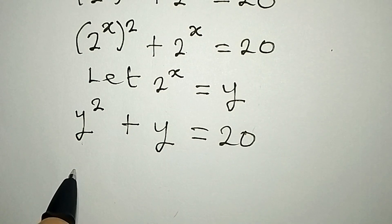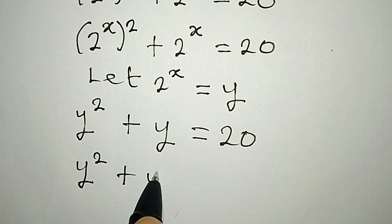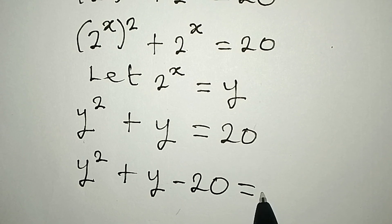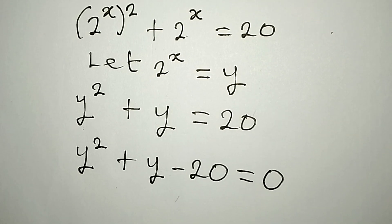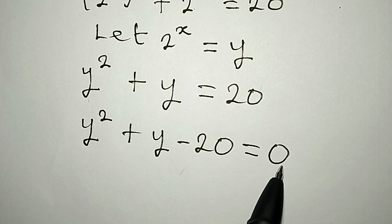Bring 20 to the other side as it becomes y to the power of 2 plus y minus 20, and it becomes 0. This is equal to 0 because 20 is now on the left hand side and there's nothing on the right.